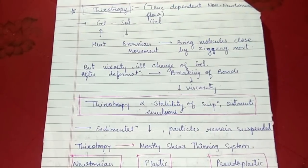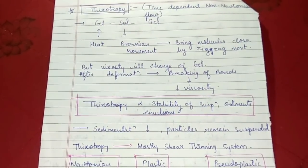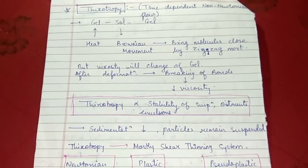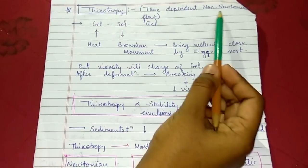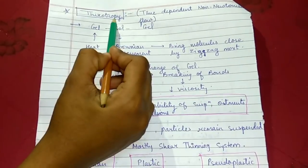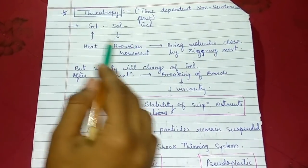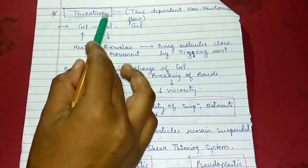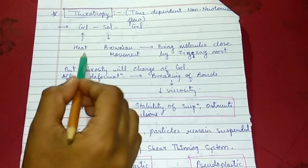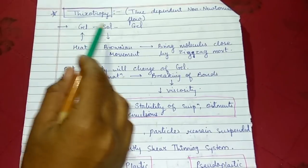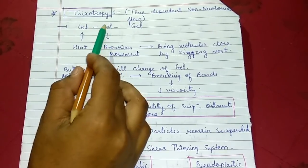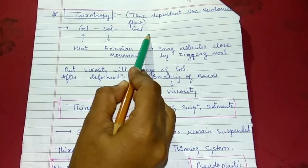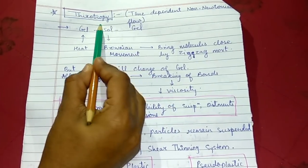Plastic, pseudoplastic, and dilatant are three types of time-independent non-Newtonian flow. Now, time-dependent non-Newtonian flows are thixotropy and rheopexy. In thixotropy, there is transformation of gel to sol and again from sol to gel. When heat is applied to gel, it is converted to solution form. When the solution is again cooled, it is converted to gel form. When it is in solution form, it follows Brownian movement.